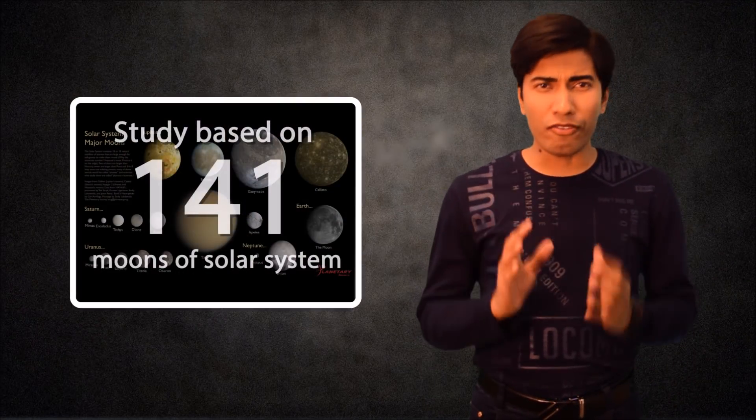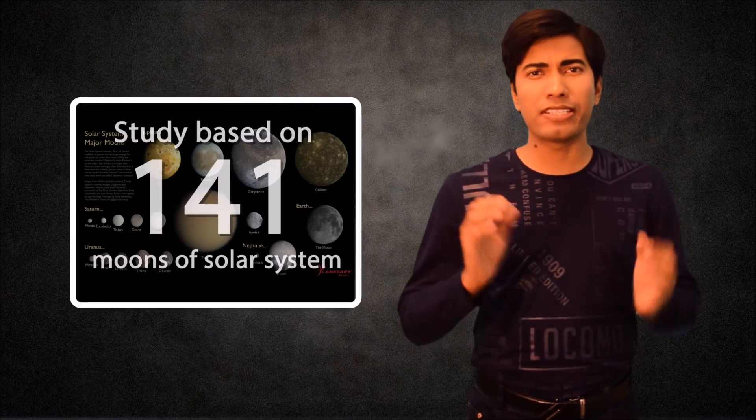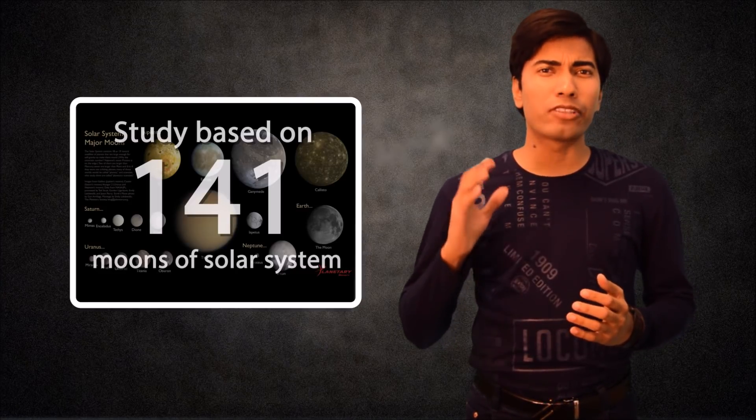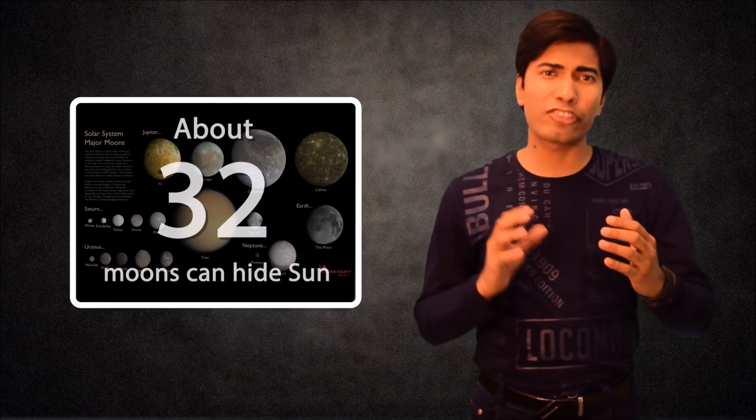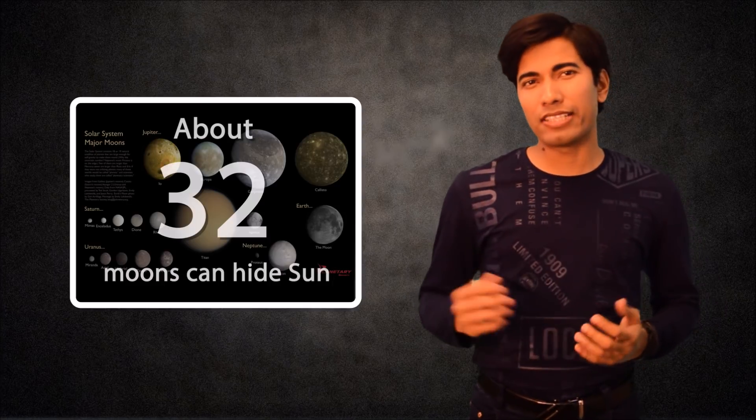According to a study based on 141 moons whose sizes and orbits are known, it is found that about 32 moons can hide the sun's disk completely when seen from their planet's surface.